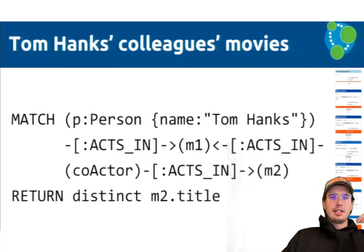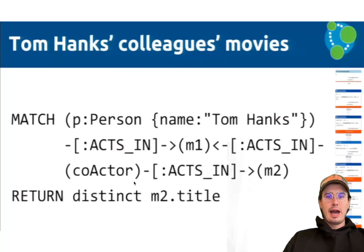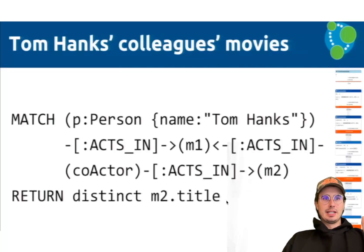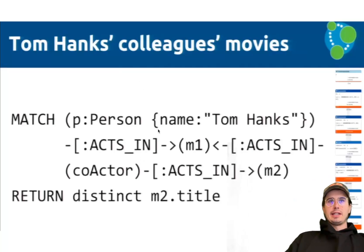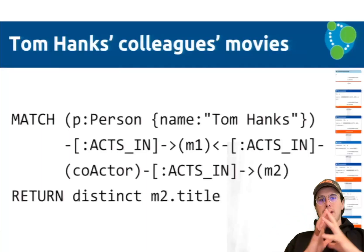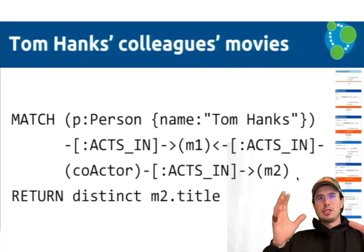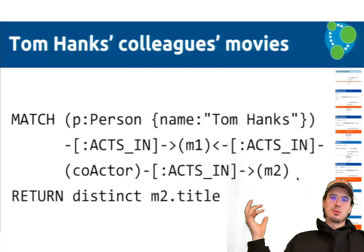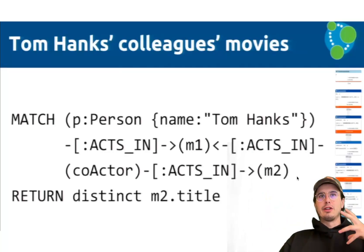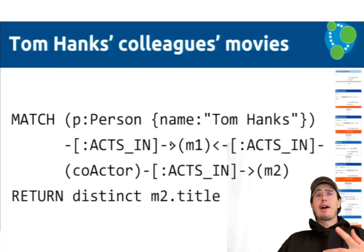Here we can see an example: match this person Tom Hanks, any movies that he acts in, get any co-actors — any actors that also act in the same movie Tom Hanks was in — and then return their title. Or you could have a simpler one: just give me all the movies that Tom Hanks is in. But you can build on this further — for example, filter by any director he's worked with — and define the relationships as they would appear in the graph using these arrows.